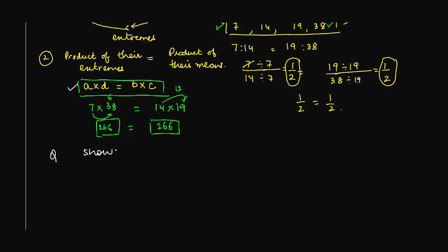Here we also show that the numbers 12, 36, 17, and 50 are not in proportion.